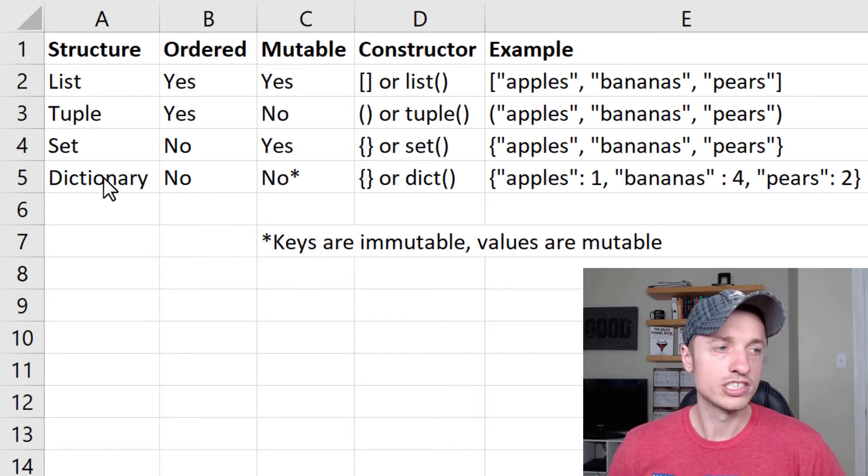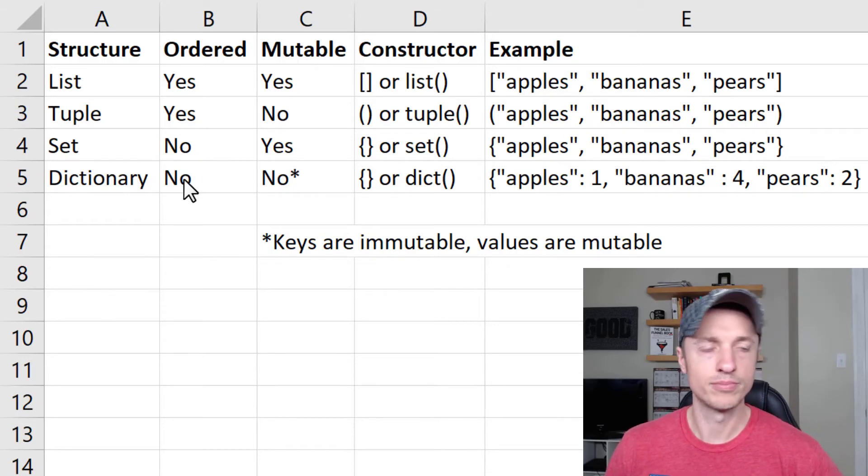And then the fourth structure we're going to go over are dictionaries. Now dictionaries are not ordered per se, and they're not mutable per se. So they're immutable.